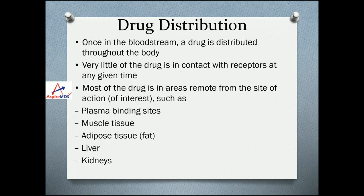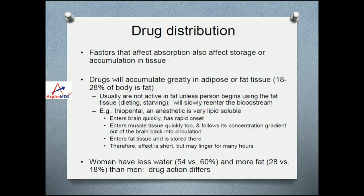Drug distribution: once the drug is in the bloodstream it gets distributed throughout the body. Only a small amount will be in contact with the actual receptors at any given time; most of the drug is in areas remote from the site of action such as plasma binding sites, muscle tissue, adipose tissue, liver, or kidney. Drugs accumulate greatly in adipose or fat tissue, which makes up 18–28% of the body. They are usually not active in fat, but can slowly re-enter the bloodstream if a person starts losing fat, for example during dieting or starvation.